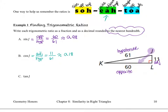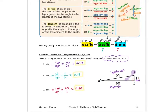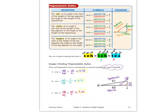The last question, question C, asks for the tangent of angle J. This is the TOA part — tangent stands for opposite over adjacent. The side opposite angle J measures 60, and the side adjacent to angle J measures 11. When we put that into our calculator, we get about 5.45. All three ratios — sine, cosine, and tangent — were computed with reference to angle J. On the next page, we're going to take a look at example one again with regards to angle K.